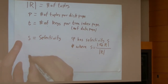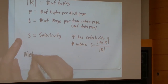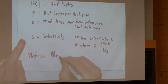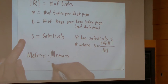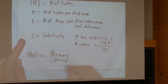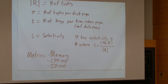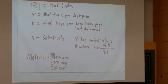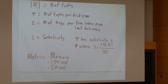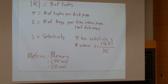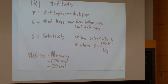In terms of performance, we care about three metrics: the amount of memory, the CPU cost, and the IO cost. Note that the IO cost and the CPU cost are not necessarily going to be the same.